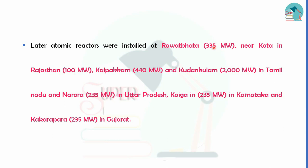Other nuclear power stations include Kalpakkam and Kudankulam in Tamil Nadu, Narora and Khaiha in Uttar Pradesh, Karnataka, and Gujarat. These are the locations where nuclear power stations are established across India.